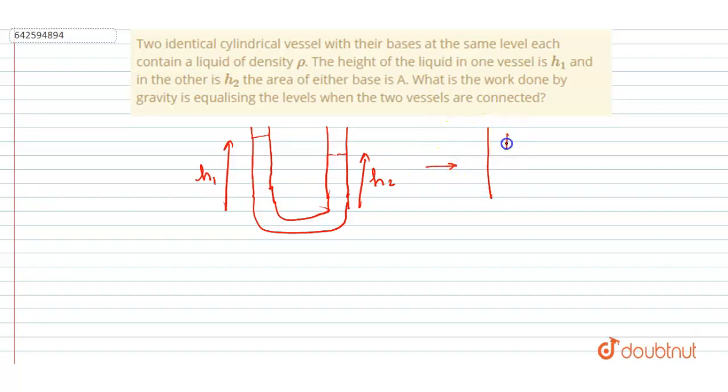And the common height here will be (h₁ + h₂)/2, right? So see here, this difference is, let's suppose, 2x. So what will happen? This h₁ height will get reduced by x, and this h₂ height will get increased by x. So here the common height you can see already.